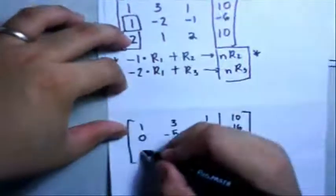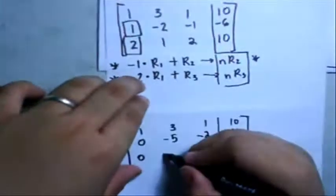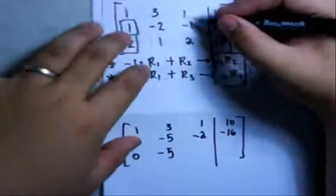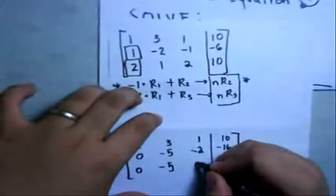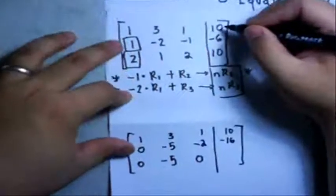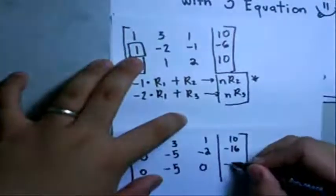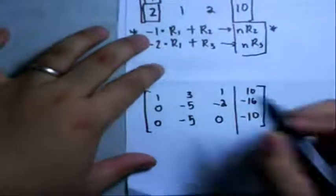Next is the solution for new Row 3. Negative 2 times 1 plus 2 is 0. Negative 2 times 3 is negative 6, plus 1 gives us negative 5. Negative 2 times 1 is negative 2, plus 2 gives us 0. Negative 2 times 10 is negative 20, plus 10 is negative 10.